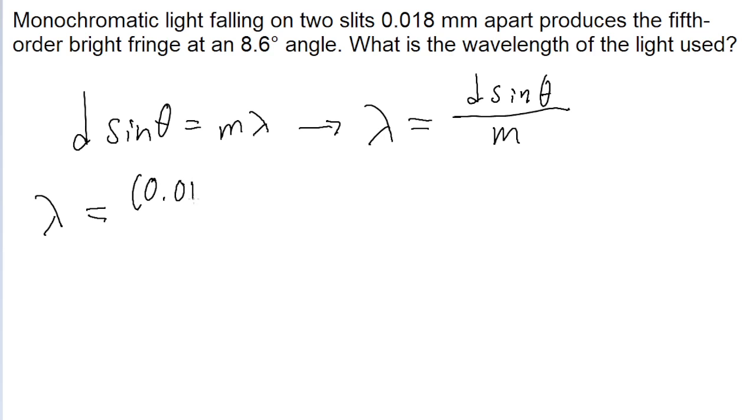so that is going to be 0.018 millimeters, which is equal to 0.018 times 10 to the power of negative 3 meters, times the sine of the angle theta, which is 8.6 degrees, all divided by the order of the fringe, which the problem tells us is 5, because we're looking at the 5th order bright fringe.